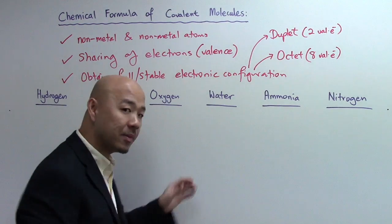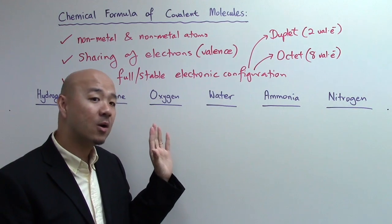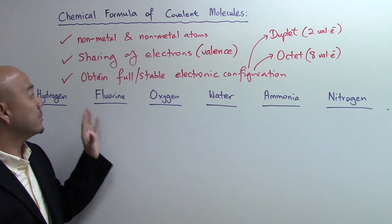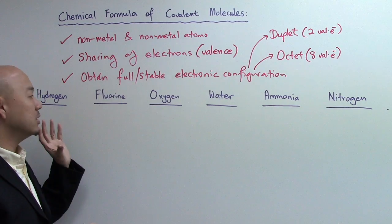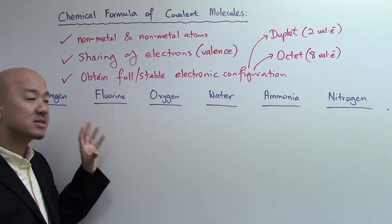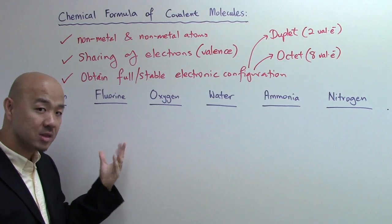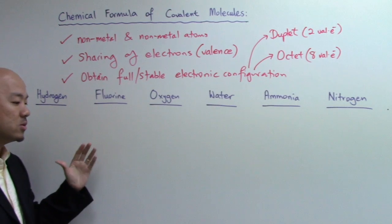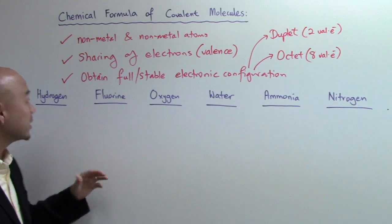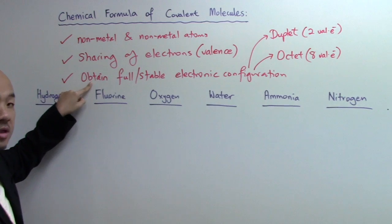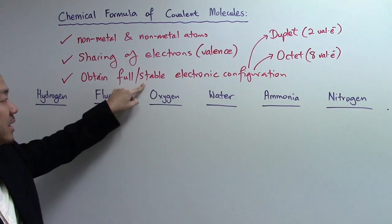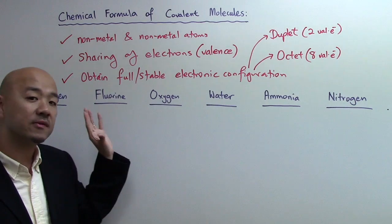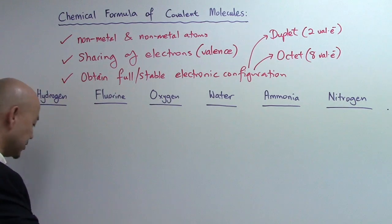Let's look at some examples and see how we can get the chemical formula. For covalent molecules, the way we determine the formula is different from ionic compounds in terms of strategy. For the covalent molecule, it's very important that you draw out the dot-and-cross diagram, and confirm that they satisfy the condition of having obtained a stable or full electronic configuration. Once it's stable, we'll be able to find the formula.